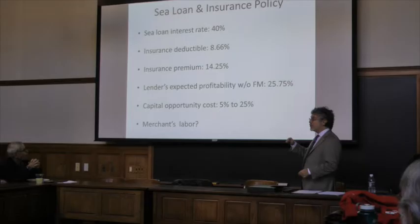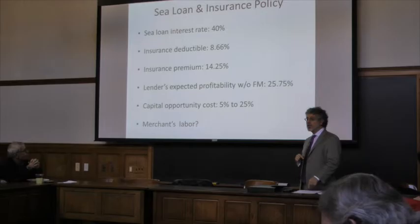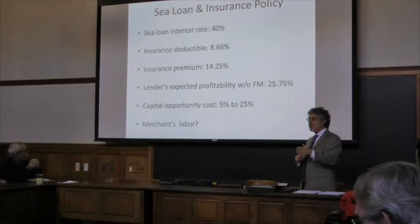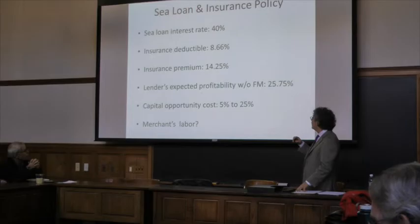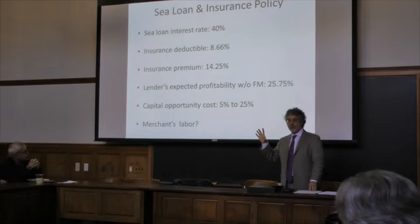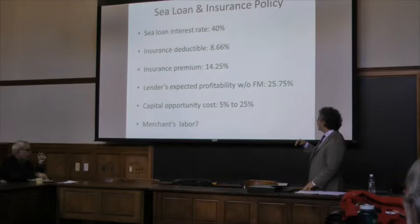The insurance premium was 14.25 percent. That means the lender's expected profitability, net of force majeure risk except for the deductible portion, was 25.75 percent. The literature on the sugar trade usually focuses on the price gap between Brazil and Europe — Portugal, the Netherlands, England — and deducts transportation costs and taxation. A sea loan also deducts taxation and transportation costs — they are all included — so the 40 percent interest rate would be net, clear of taxation and transportation costs.